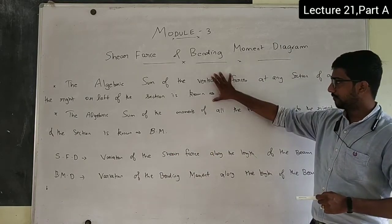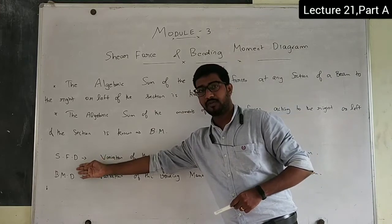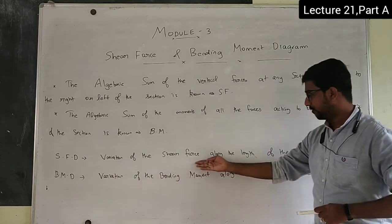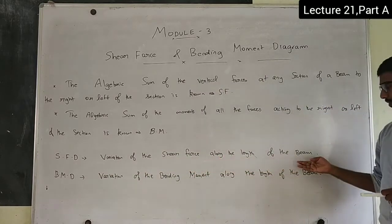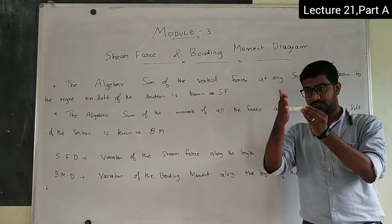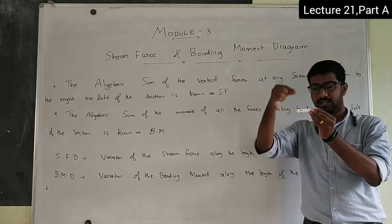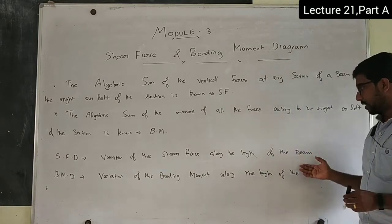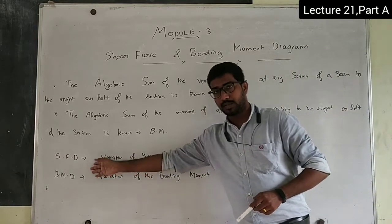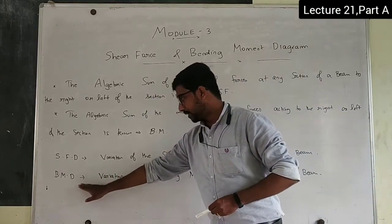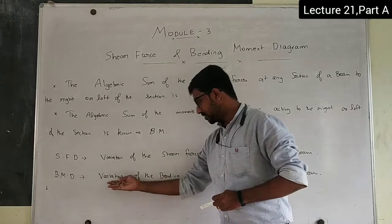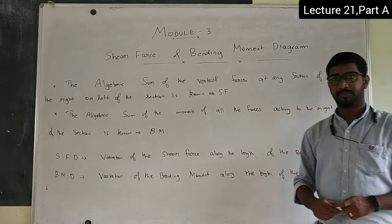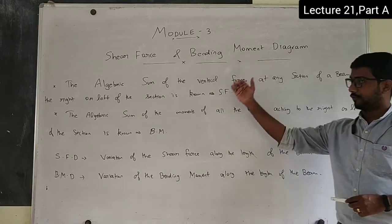Now we are going to talk about the shear force diagram. The diagram which shows the variation of the shear force along the length of the beam is called the shear force diagram. The bending moment diagram is the diagram which shows the variation of the bending moment along the length of the beam.